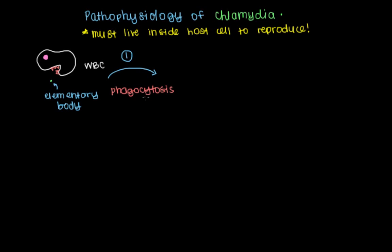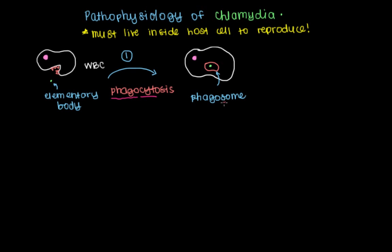If you've heard the term phagocytosis before, you might recognize that 'cyto' just means cell, and 'phago' is a fancy way of saying to eat — so this cell is eating the elementary body. After a big gulp, the elementary body is now contained within a vesicle, also referred to as a phagosome. The teeth in the drawing are actually the cell membrane lining of the white blood cell that envelops around the elementary body to turn it into this pocket — this phagosome — within the cell.